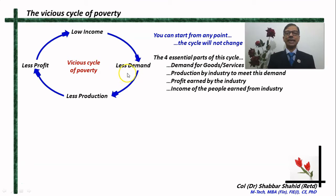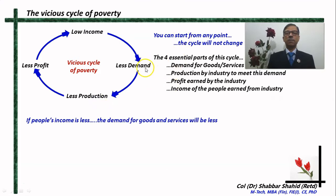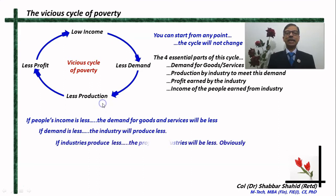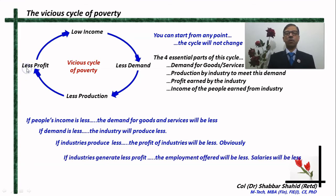So if the demand is less, then the industry will produce less. If there is no demand or if the demand is less for any goods or services — fruits, vegetables, grains, whatever — then the farmers will produce less. And when they produce less, they will earn less profit. They will not grow, they will not diversify. And when they earn less profit, they will offer less employment. Employment will not grow, industries will not grow. And when there is less employment, the income in the hands of the people will be less.